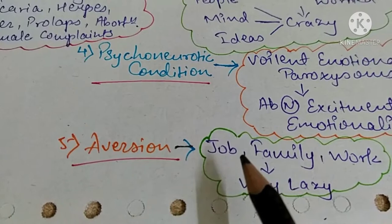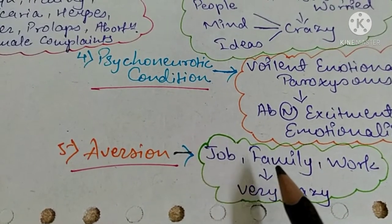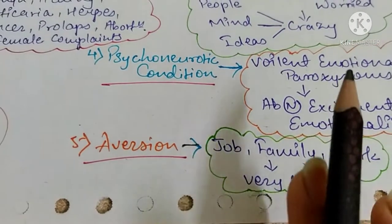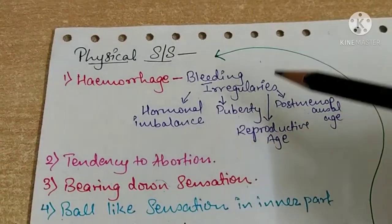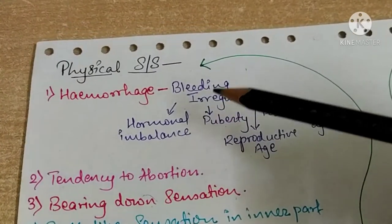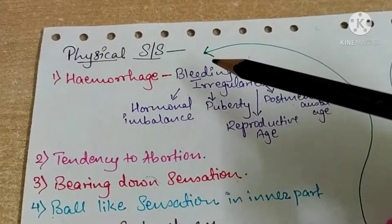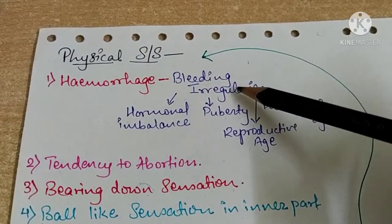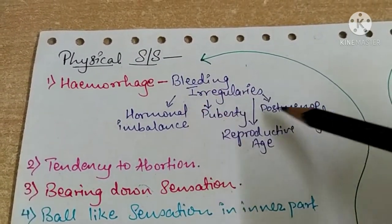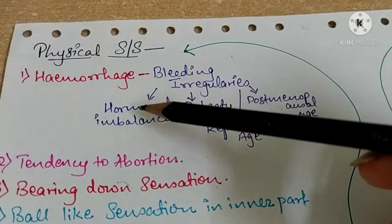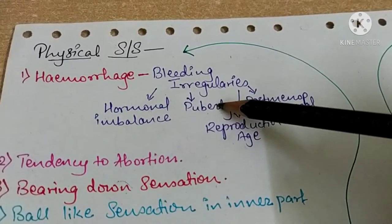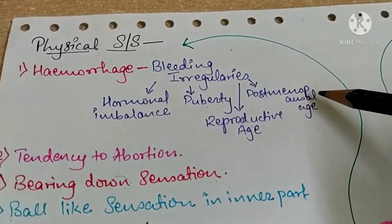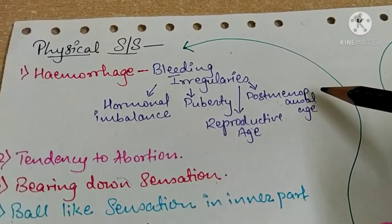Aversion: They have aversion for their job, family, and work — these patients are very lazy. Physical signs and symptoms: Hemorrhage — there is a hemorrhagic tendency in females, with bleeding irregularities seen in all age groups due to hormonal imbalance, puberty, reproductive age, or post-menopausal age.